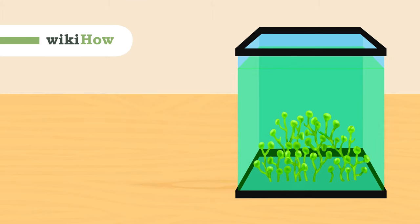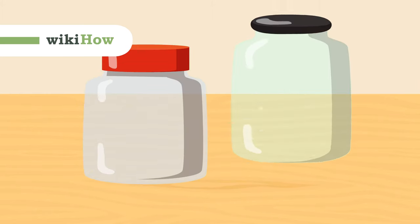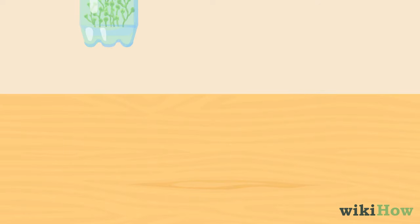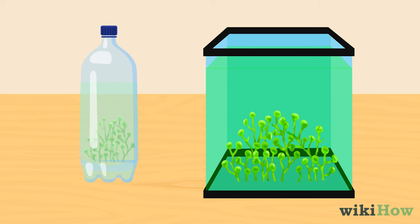To grow your own algae, first you'll need a clear plastic or glass container. You can use a plastic water bottle to grow a small amount of algae, or a glass aquarium to grow more.